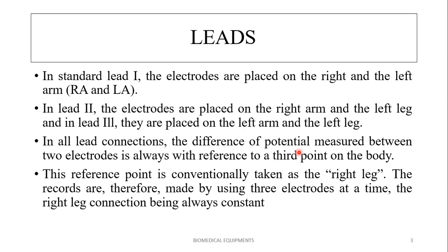What are the types of leads? In standard Lead 1, the electrodes are placed on the right arm (RA) and left arm (LA). In Lead 2, the electrodes are placed on the right arm and the left leg. In Lead 3, they are placed on the left arm and left leg. In all lead connections, the potential difference is measured with reference to a third point — conventionally, the right leg is used as the reference point.